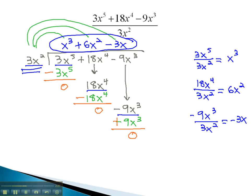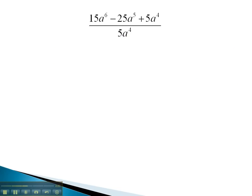Let's try another example, so we can see this long division by a monomial one more time. In this problem, we're dividing 5a to the 4th into the polynomial 15a to the 6th minus 25a to the 5th plus 5a to the 4th.